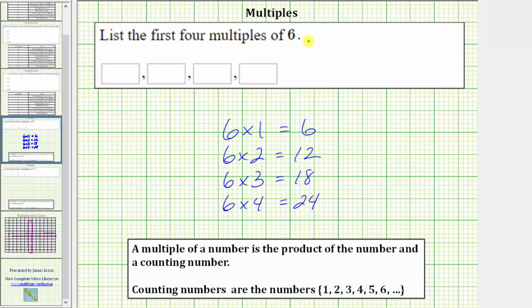The first four multiples of six are six, 12, 18, 24.